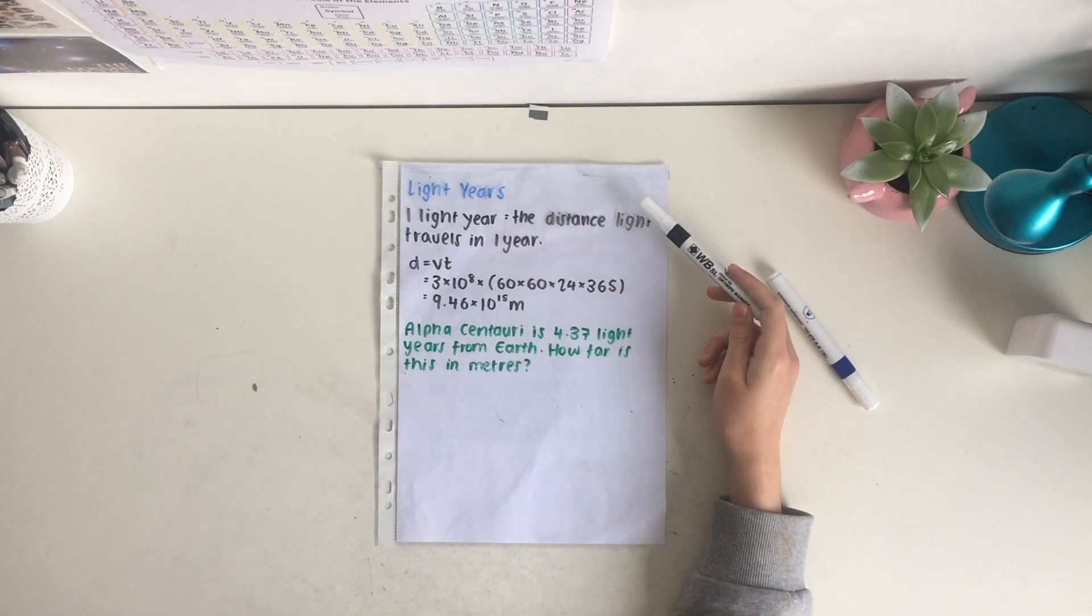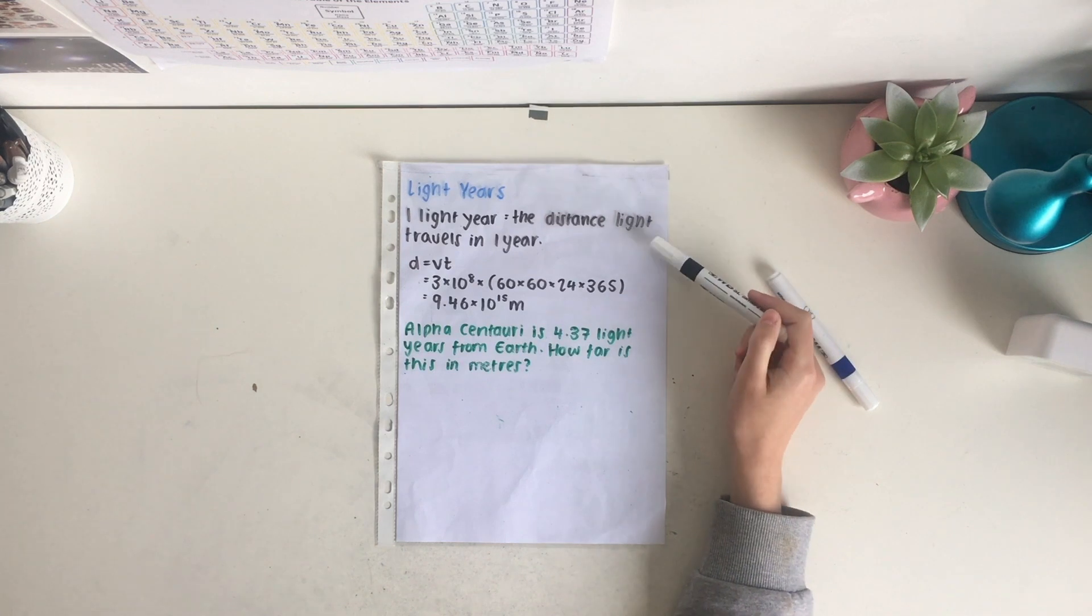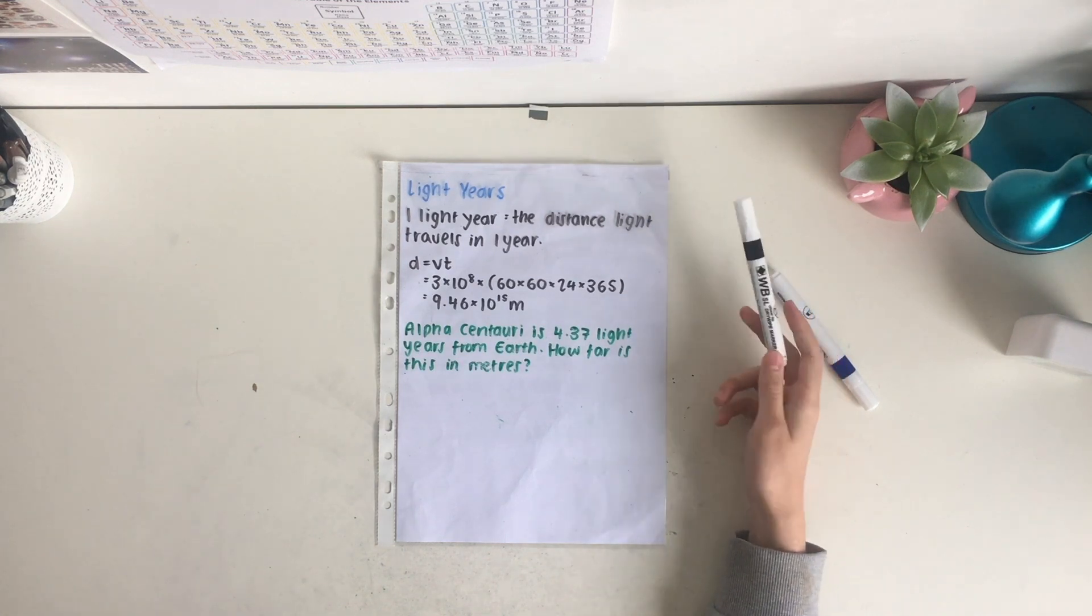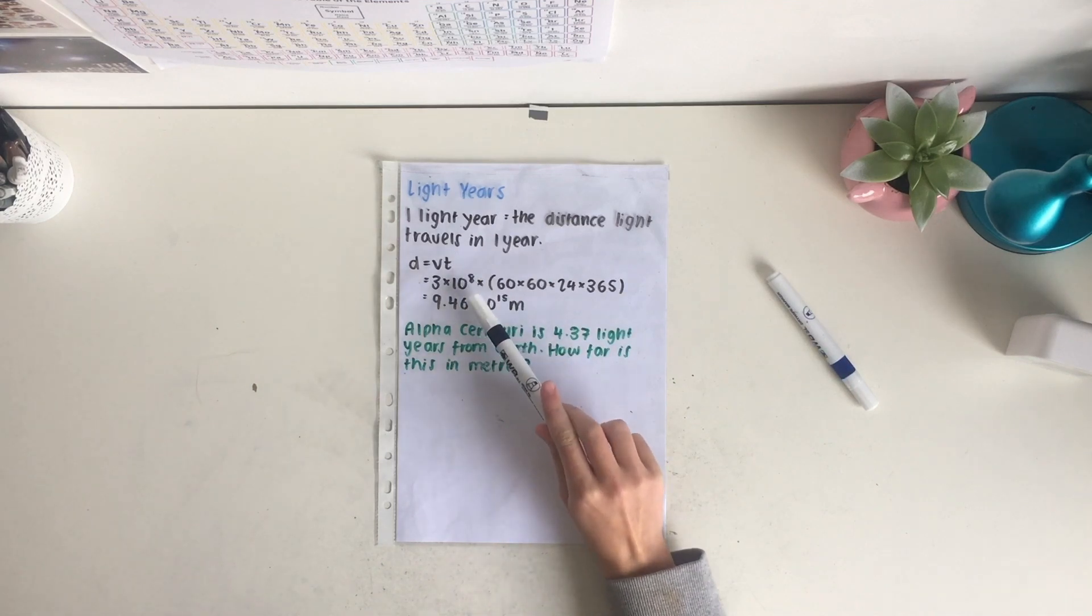In space the distances are huge, so we use a different unit of measurement to measure these distances. A light year is the distance that light can travel in one year. To work out this light year, we use d equals vt because we know that the speed of light is